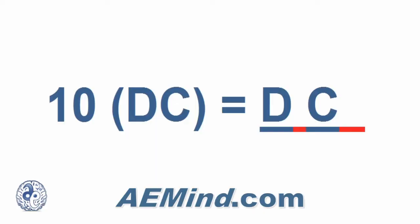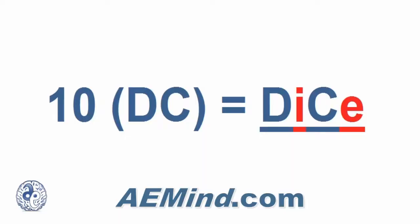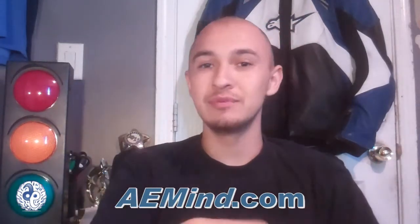We're going to use the D sound for the number one and the C sound for the number zero, and we create a picture. From now on, every time you see or hear the number 10, you are going to picture dice. Picture a set of dice — maybe you're at a casino rolling dice. So picture the dice for number 10.